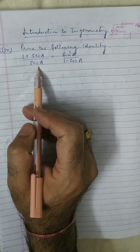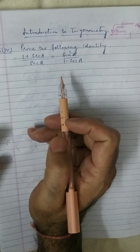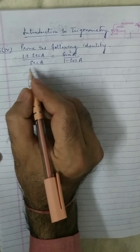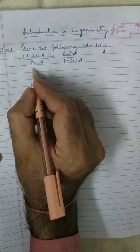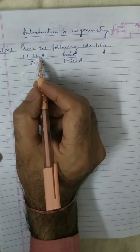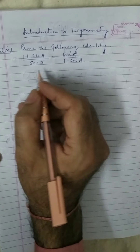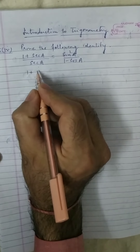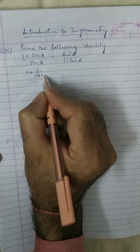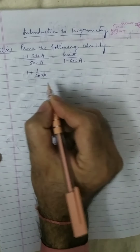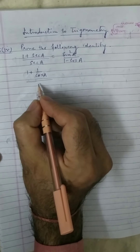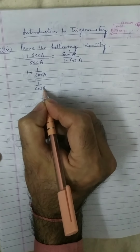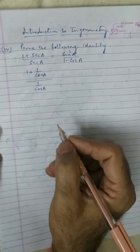Now, we prove left hand side equal to right hand side. Take left hand side: 1 plus secant a upon secant a. You have to change secant a into cos a. 1 plus secant a can be written as 1 upon cos a, and the denominator secant a is the inverse of cos a.